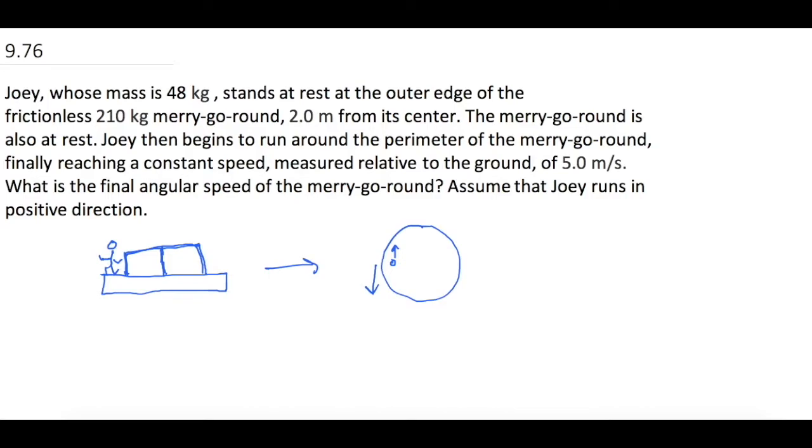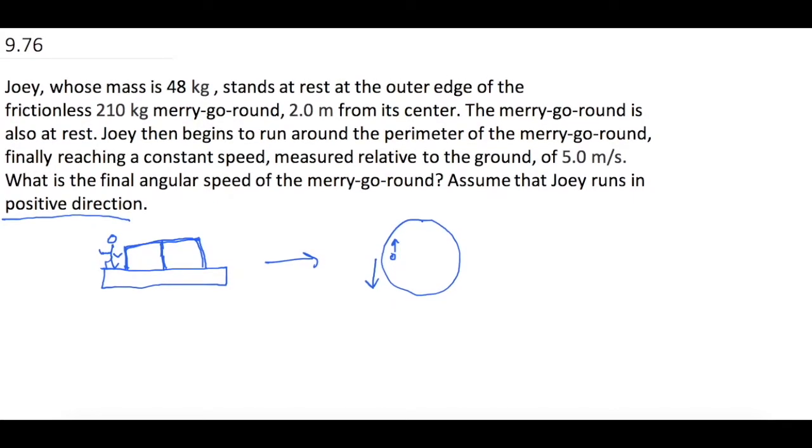So we're going to have a conservation of momentum, and we're going to figure out how fast is that merry-go-round going to go if Joey is pushing it or going however fast in the opposite direction. So they tell us that Joey is running in the positive direction. So the merry-go-round will have a negative answer for us because it will be spinning opposite the direction that he's going. And we also know it's negative just because they say that he's always running in the positive.